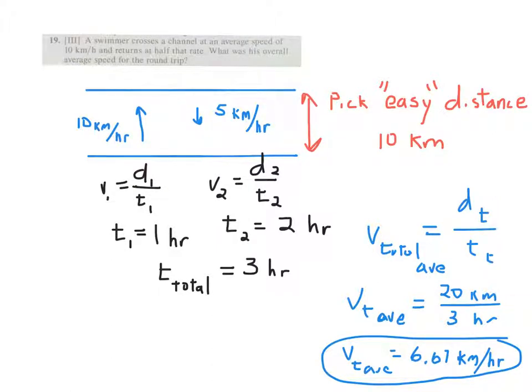AP Physics page 53 homework problem number 19. This one is a little bit more to it than initially looks like because the rookie mistake is that they go across one way at 10 kilometers per hour, they come back the other way at 5 kilometers per hour.